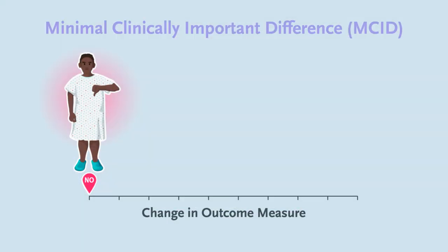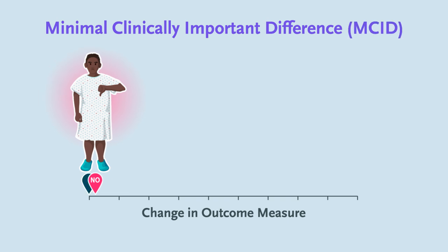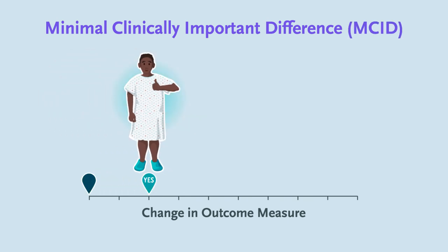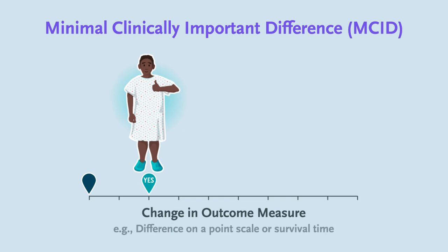Addressing that question requires an understanding of what's known as the Minimal Clinically Important Difference, or MCID. The MCID is the smallest change in an outcome measure, say, the difference on a point scale or difference in survival time, that would be perceived as beneficial.